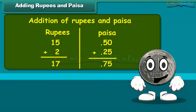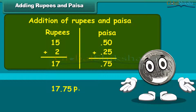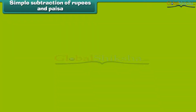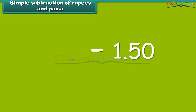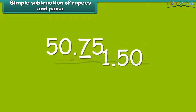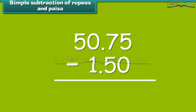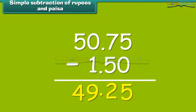Therefore, the sum is 17 rupees and 75 paisa. Subtraction of rupees and paisa is simple. Subtract 1 rupee 50 paisa from 50 rupees 75 paisa. We first subtract numbers in the paisa column and then in the rupee column. So, the answer is 49 rupees and 25 paisa.